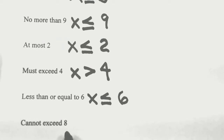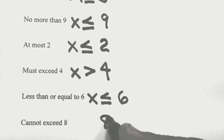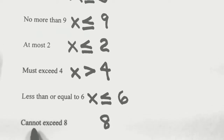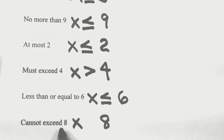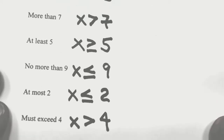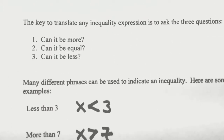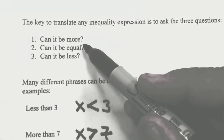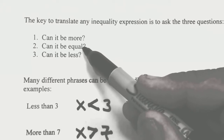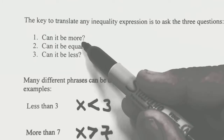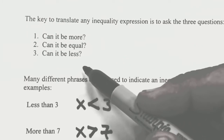Cannot exceed 8: can we be larger? We can't exceed it, so no. Can we be equal? Well, if 8 is 8, we're not exceeding 8 — we just can't be anything larger than 8, so equal is okay. Can it be smaller? Yes, as long as it doesn't exceed. So we can have a value which is smaller than 8 and also equal to 8: less than or equal. As you've seen, what it boils down to is asking these three questions: can we be more, equal, or less than the value given?